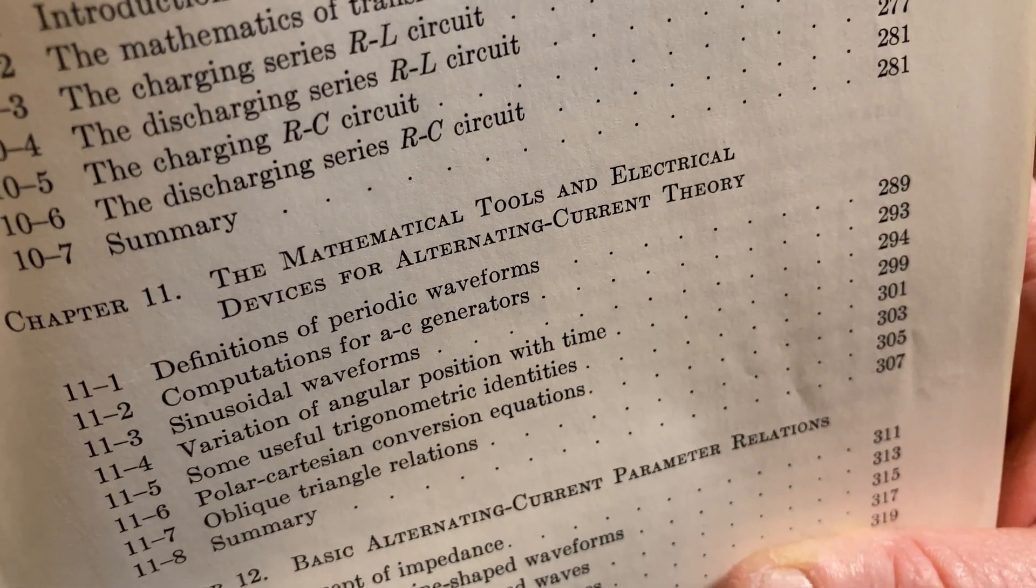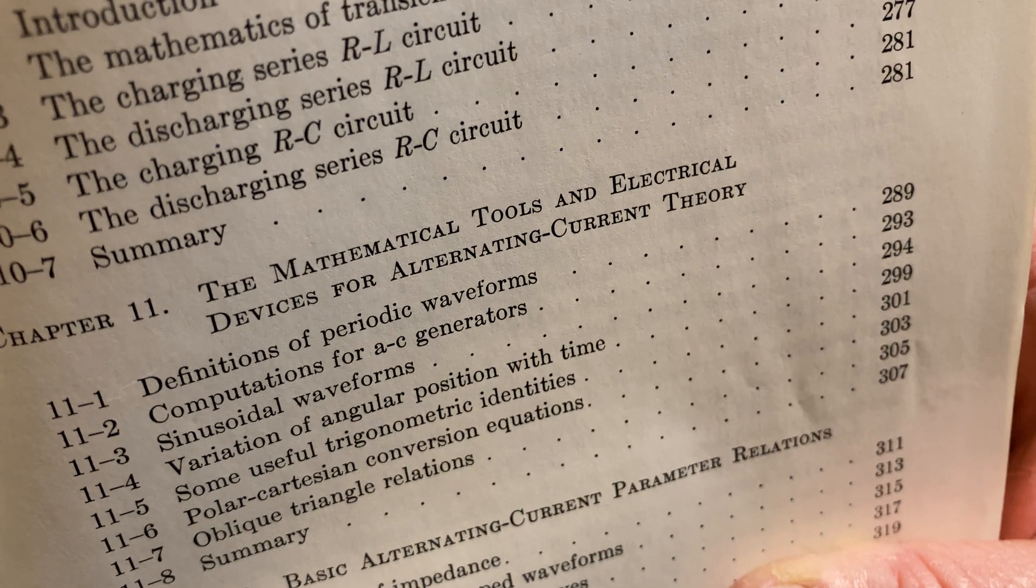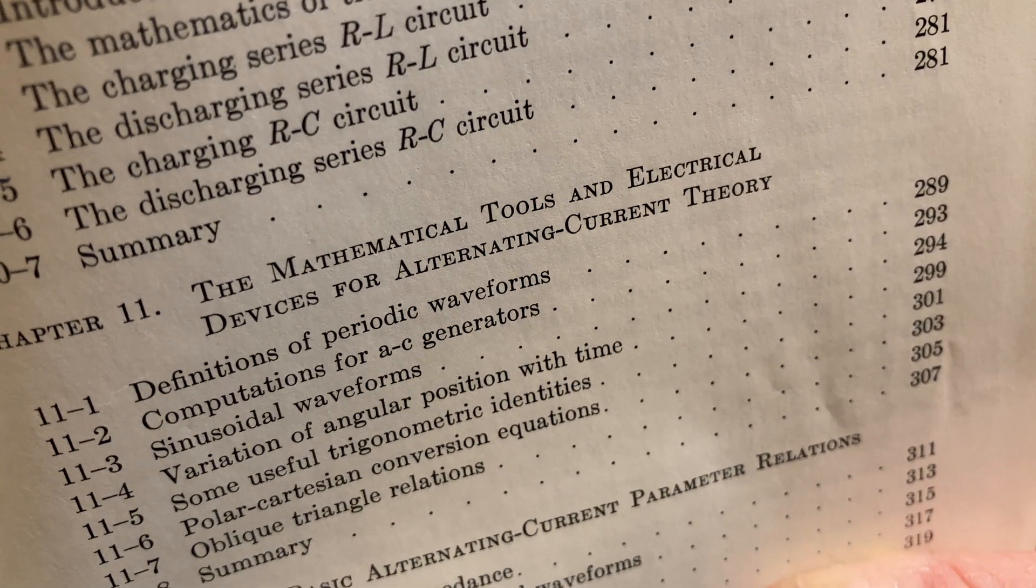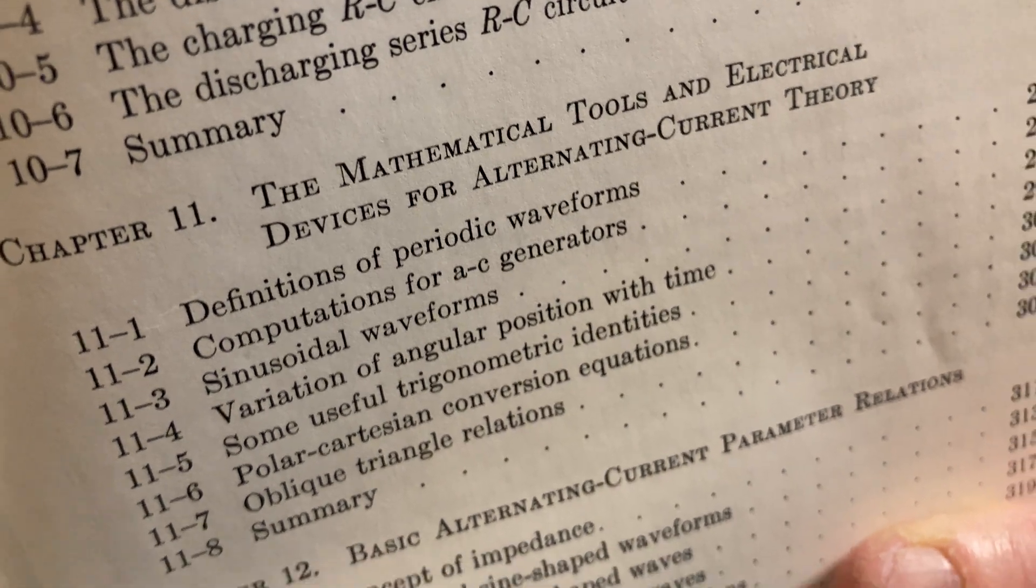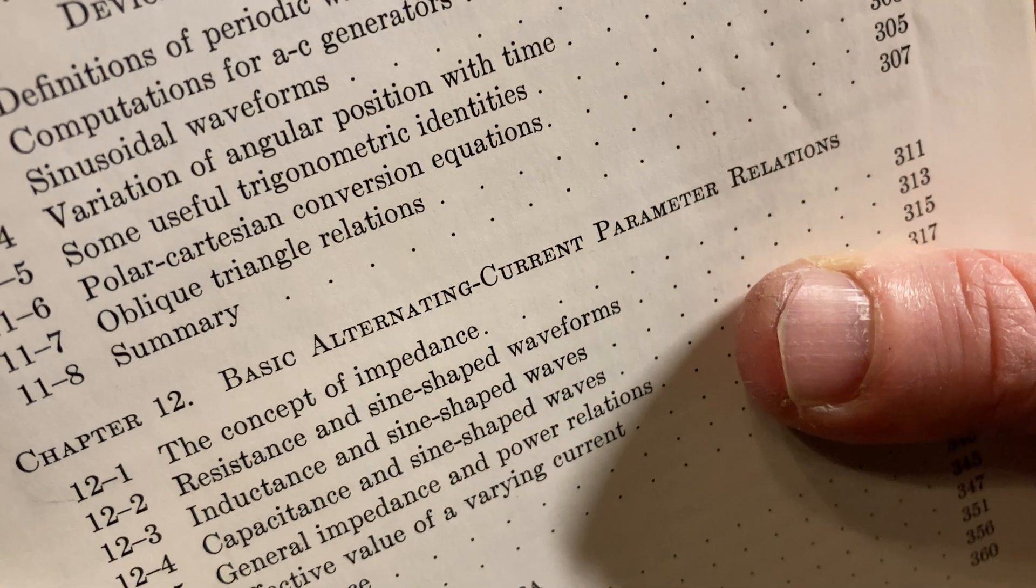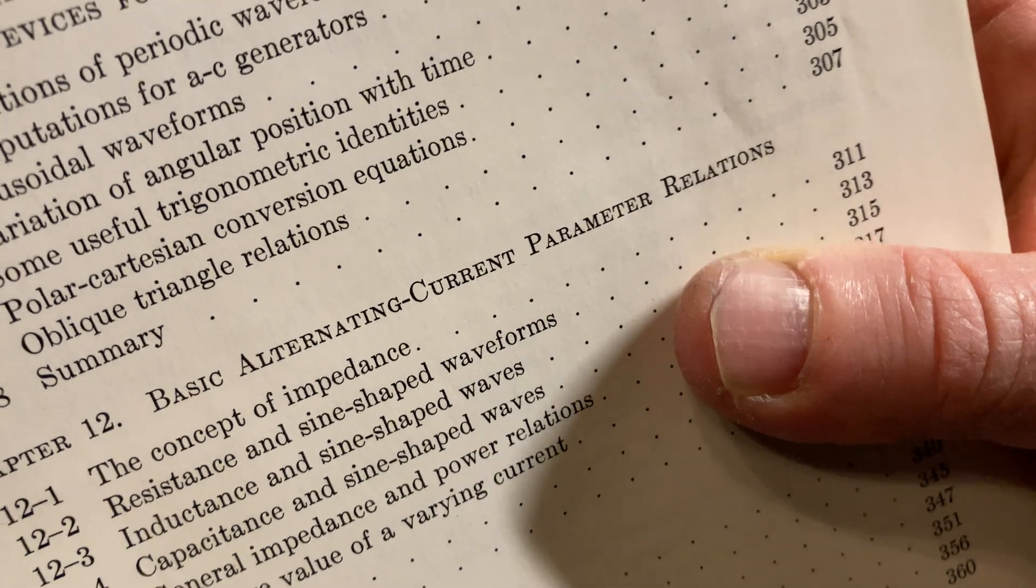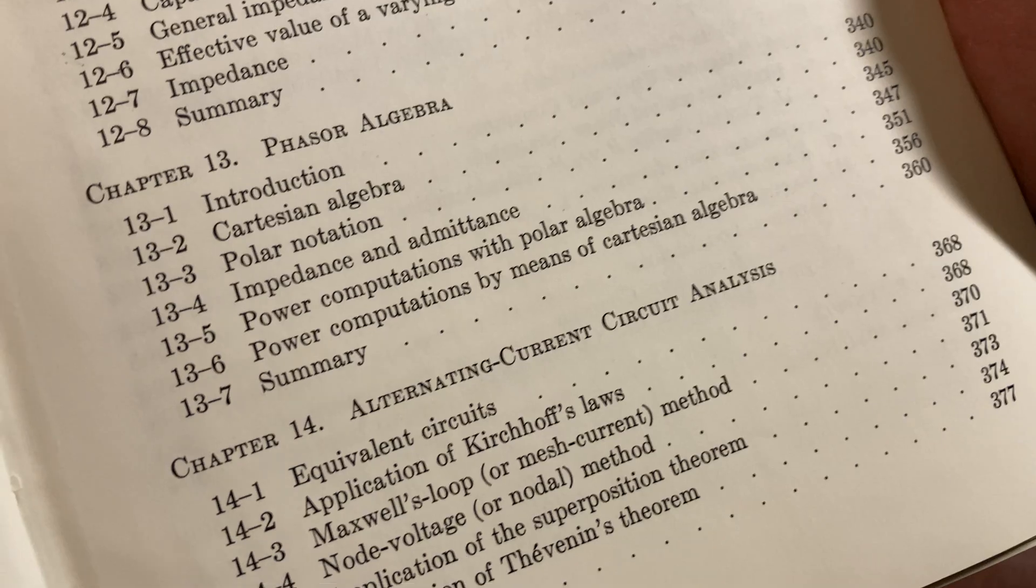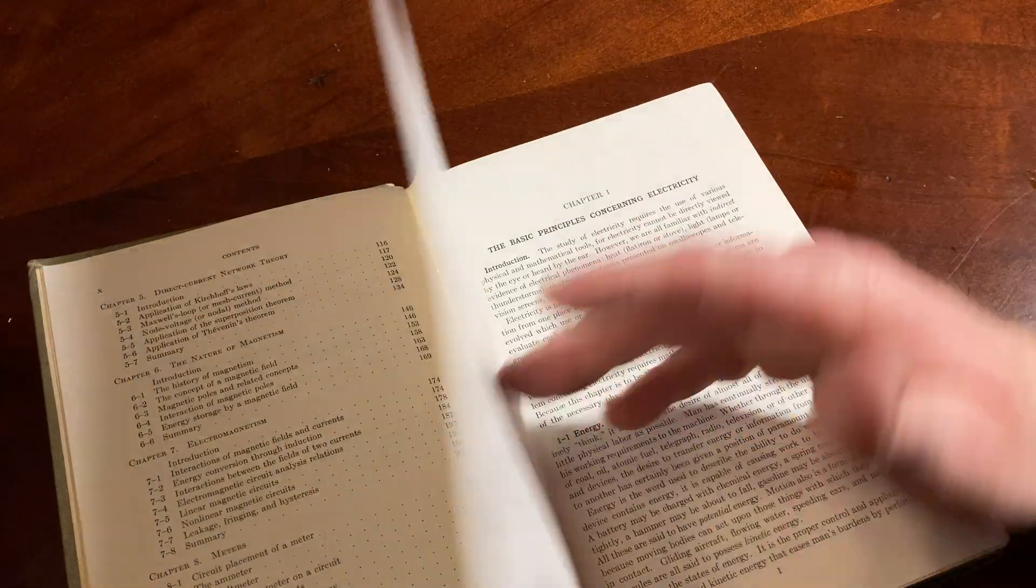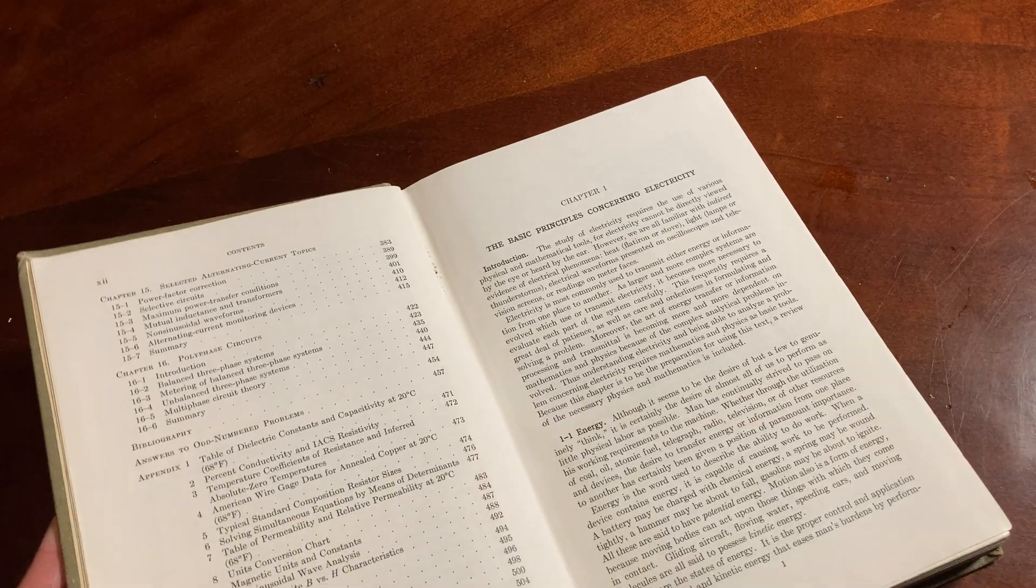The mathematical tools and electrical devices for alternating current theory, definitions of periodic waveforms, basic alternating current parameter relations. All kinds of stuff, right? What a lot of information. So much. There's so much knowledge in books.